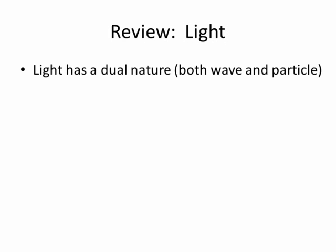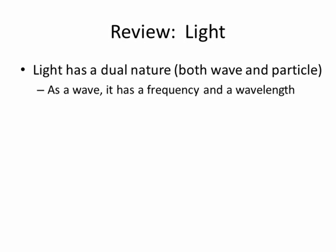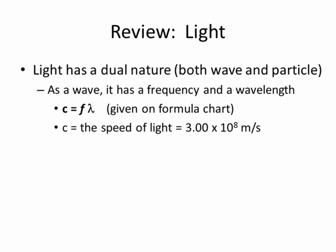A few things about light will be important to review as well. Light can be thought of as both a wave and a particle — it's a wave when it's traveling, and it's a particle when it's interacting with matter. Light waves have frequency and wavelength, just like any waves. The equation that relates frequency and wavelength is given on the formula chart. C represents the speed of light, F is frequency, and that other symbol is for the wavelength.